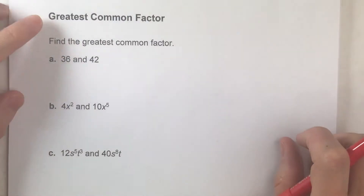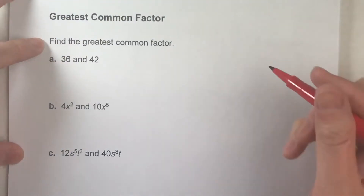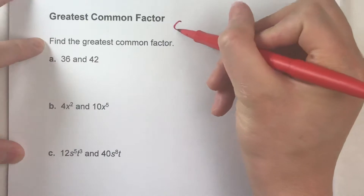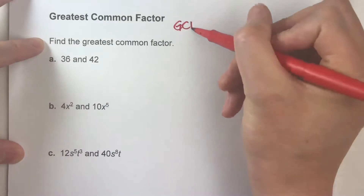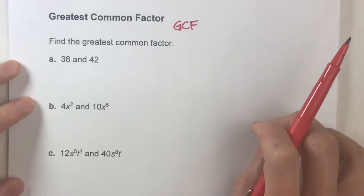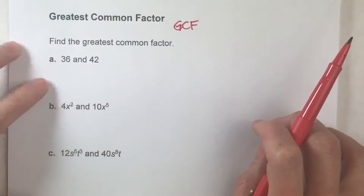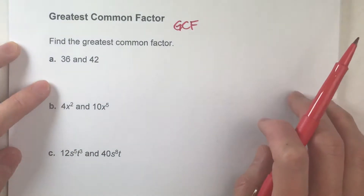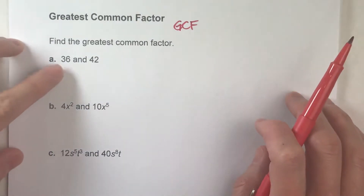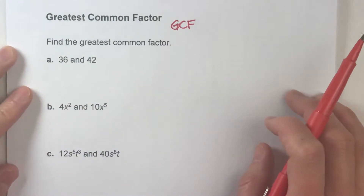Today we are finding the greatest common factor, otherwise known as the GCF. The greatest common factor of a set of numbers is the biggest number that divides into both of them.